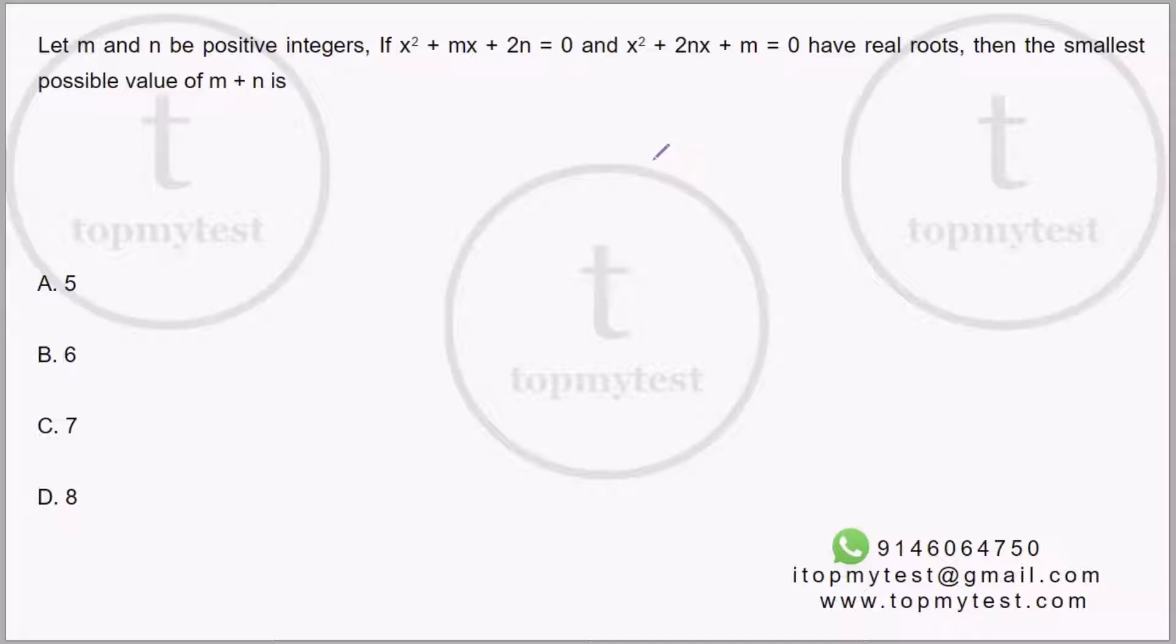So this one says m and n be positive integers. x² + mx + 2n = 0 and x² + 2nx + m = 0 have real roots.